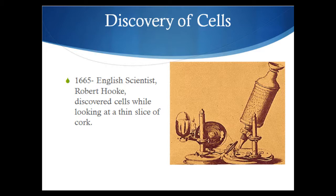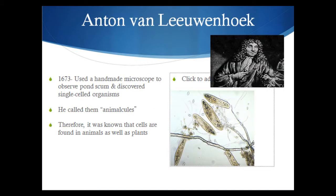The first scientist that we are going to talk about is responsible for actually discovering cells. This took place in 1665, and this scientist's name was Robert Hooke. He actually discovered cells while he was looking at a thin slice of cork underneath a very simple microscope. What he noticed was that it looked like it was divided up into rooms like you might have in your house. He compared it to cells or the rooms you might see in a jail — jail cell — or the rooms in a monastery that monks lived in. So his main contribution was that he actually discovered cells while looking at a thin slice of cork.